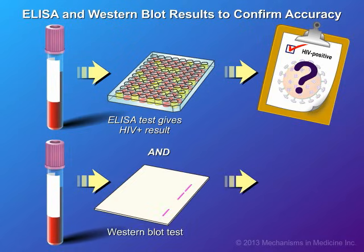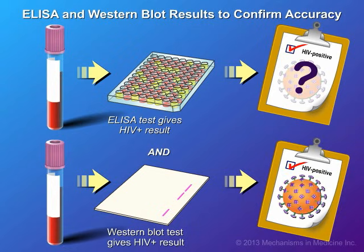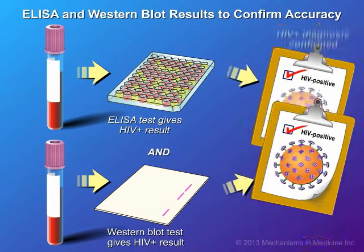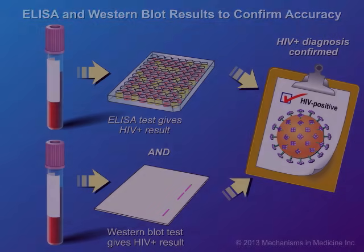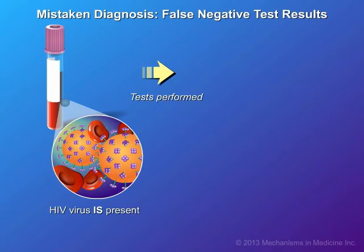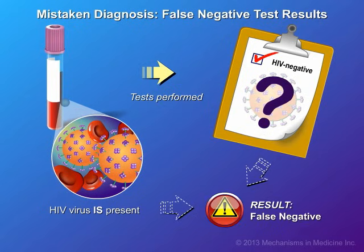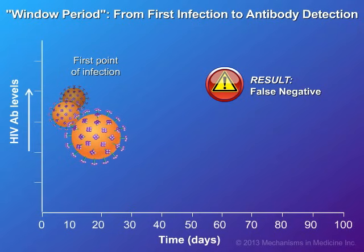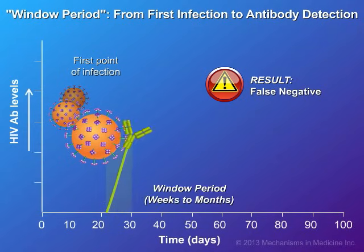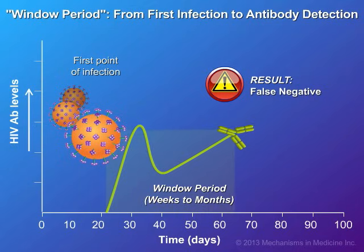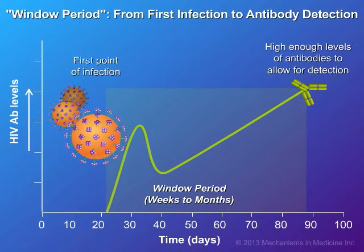If both the ELISA and Western blot antibody tests return HIV positive results, then a diagnosis of HIV infection will be confirmed. When HIV antibody testing fails to detect actual HIV infection, this is called a false negative result — the test is negative even though a person is infected with HIV. A false negative result typically gets recorded during the so-called window period following potential exposure. The window period, usually weeks to months, is the time it takes from the first point of infection for enough HIV antibodies to be produced at levels that are detectable within the blood.